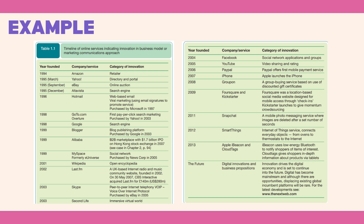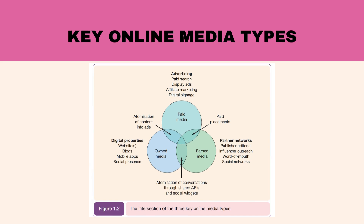Paid, owned and earned media: to develop a sound digital strategy today involves understanding a more complex, more competitive buying environment than ever before, with customer journeys involving many different forms of online presence. To help develop a strategy to reach and influence potential customers online, it's commonplace to refer to three main types of media channels marketers need to consider today. One: paid media. These are bought media where there is investment to pay for visitors, reach or conversions through search, display ad networks or affiliate marketing. Offline, traditional media like print and TV advertising and direct mail remain important, accounting for the majority of paid media spend.